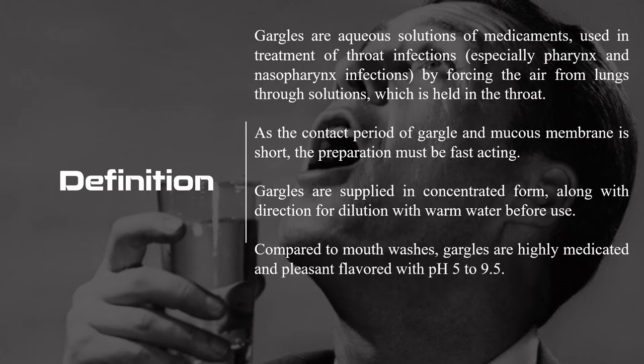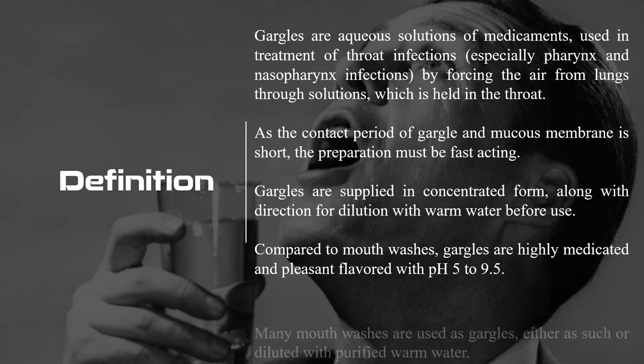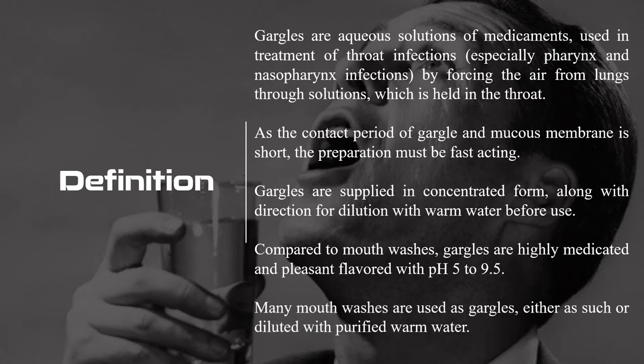Compared to mouthwashes, gargles are highly medicated and pleasantly flavored, with pH ranging from 5 to 9.5. Many mouthwashes can also be used as gargles — either as such or diluted with purified warm water. You can dilute it with purified water, or if the mouthwash comes in a diluted form, you can use it as such.